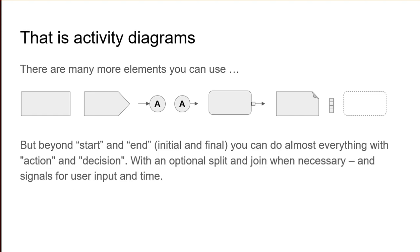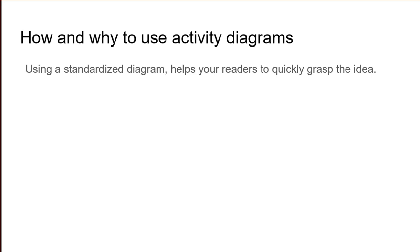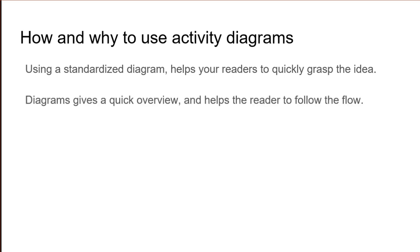And that concludes this introduction to activity diagrams. There are many more elements in the standard, but beyond start and end, you can do almost everything you need with just actions and decisions — maybe an optional split and join when necessary, and of course signals for user input and time. Because that is the main idea with activity diagrams: making your reader quickly understand a process. That is why you want to use a standard form of diagrams rather than invent your own or write everything as plain text. Diagrams give a quick visual overview that helps the reader follow a flow — they can put a finger on the drawing and literally follow the actions around the diagram.